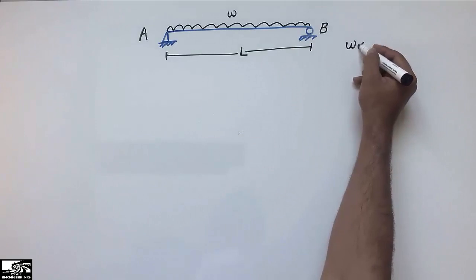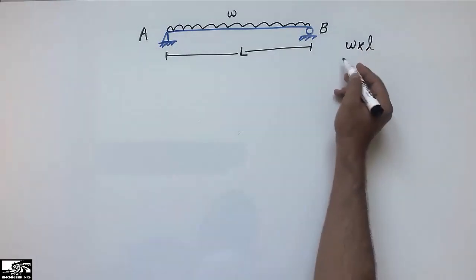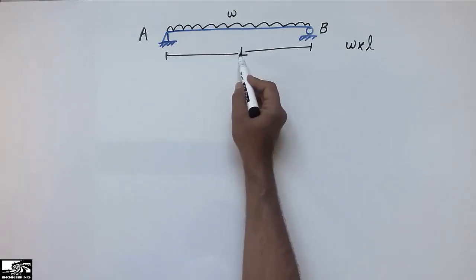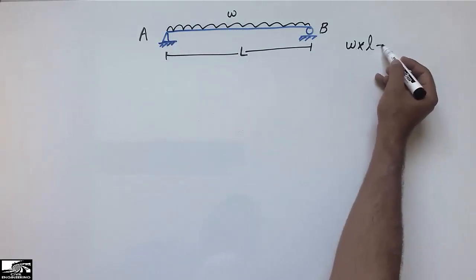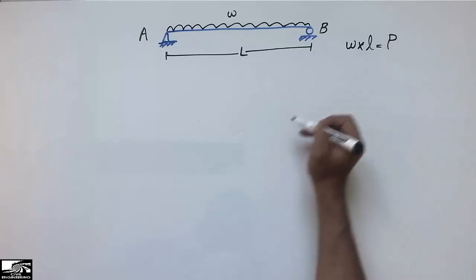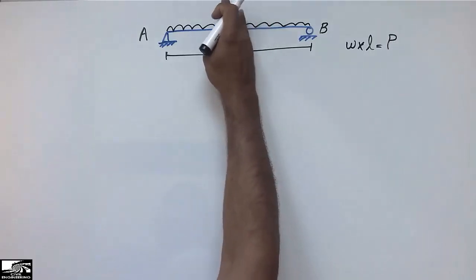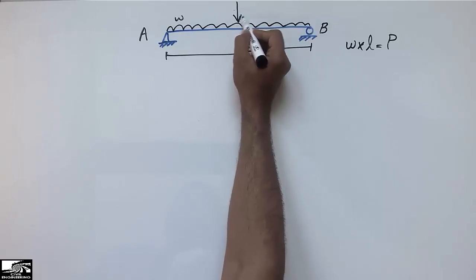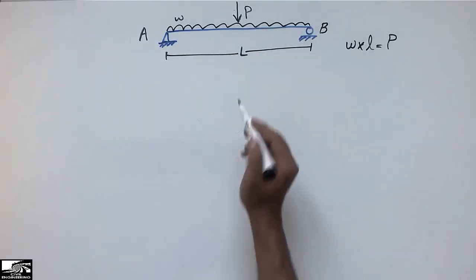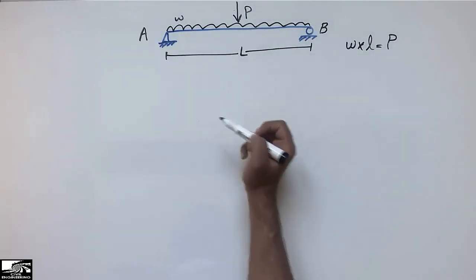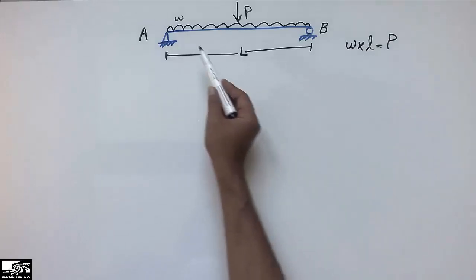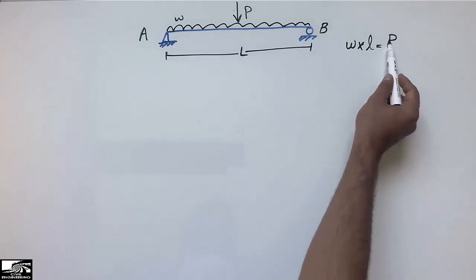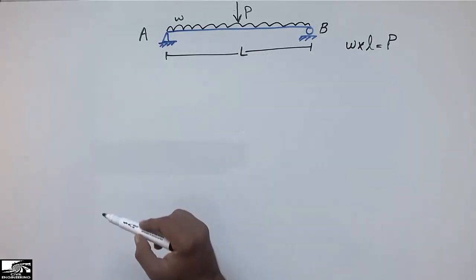The whole uniformly distributed load is multiplied by the length of the beam, giving a point load P = W × L. This concentrated load P acts at the center of the beam.